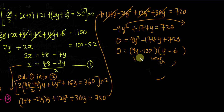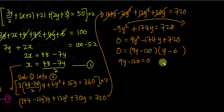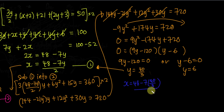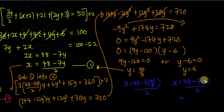Therefore, 9y minus 120 = 0 or y minus 6 = 0, giving y = 6 or y = 120 over 9 = 40 over 3. Now I'll find x by substituting each y value back into the first equation: x = (48 minus 7y) over 2. For y = 6: x = (48 minus 42) over 2 = 6 over 2 = 3. For y = 40 over 3: x = 48 minus 7 times (40 over 3), divided by 2.